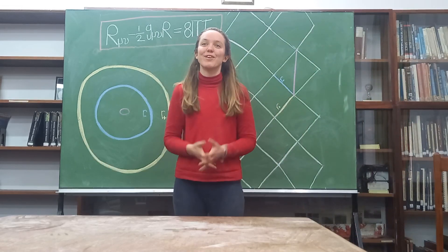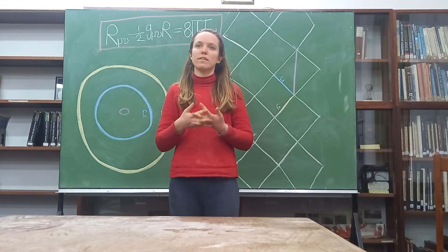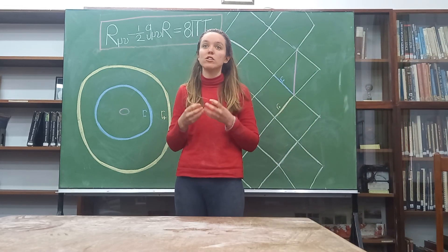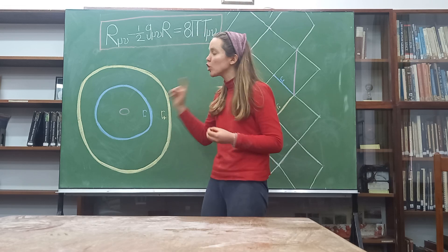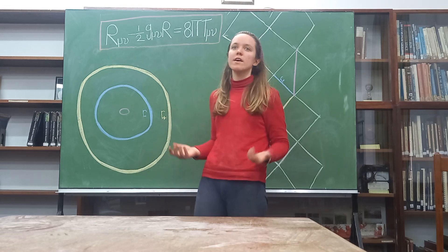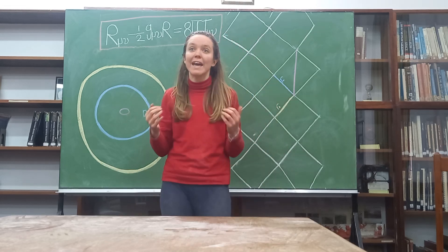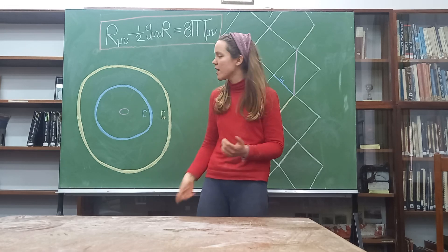Can many universes exist? A way to answer this is to look at a special type of black hole called a Kerr rotating black hole. This is formed from the collapse of a rotating star.